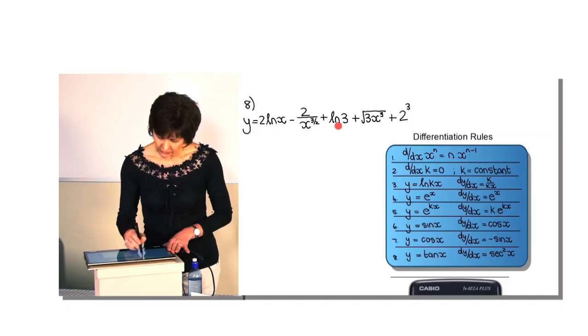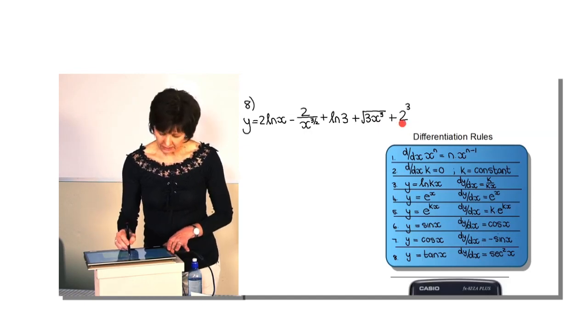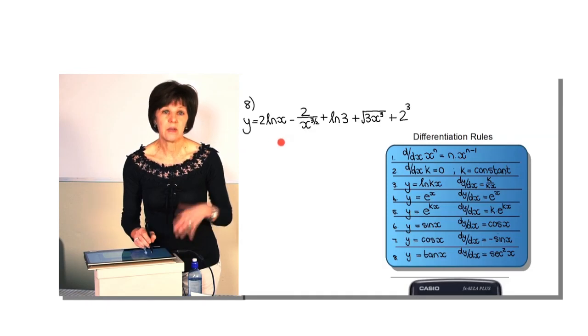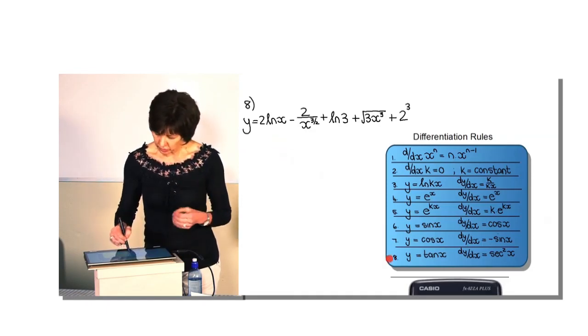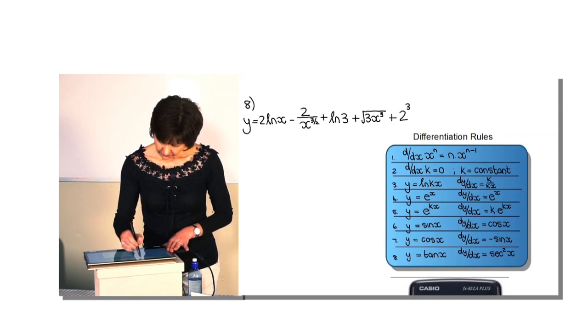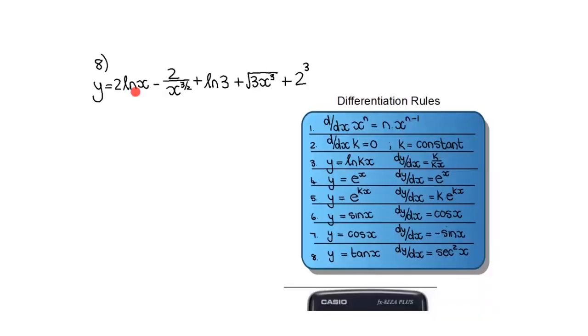We are at example number 8, which has 5 terms to differentiate — it's a mixed problem. Can I differentiate straight away? Well, let's see. I cannot, because x is in the denominator and the rule says it must be in the numerator to use the first rule. Also, the second last term is not in exponent form, it's in surd form, so I'll have to change it to exponent form first. So I still first have to rewrite y in the correct form.